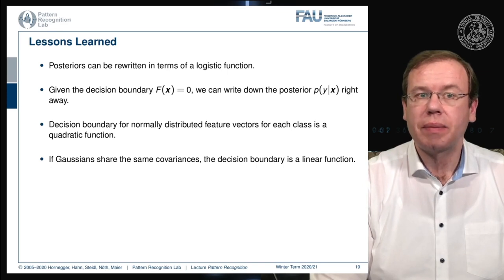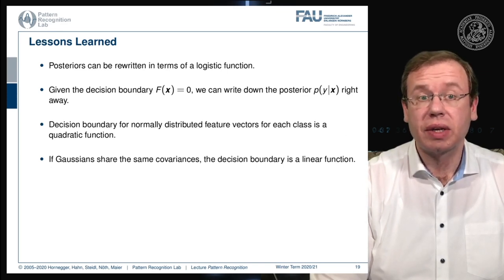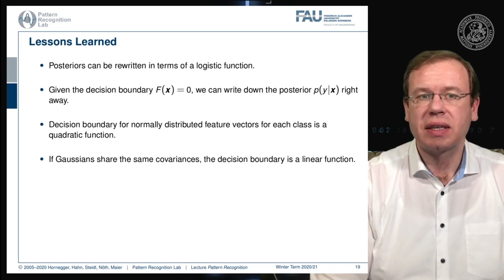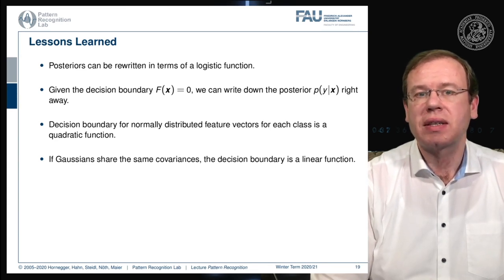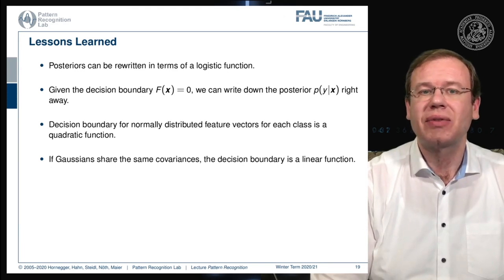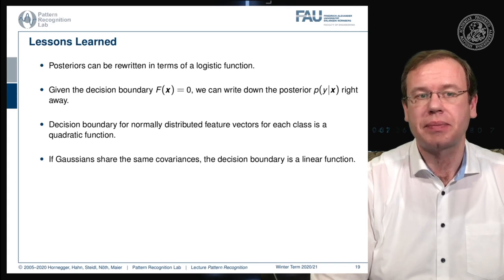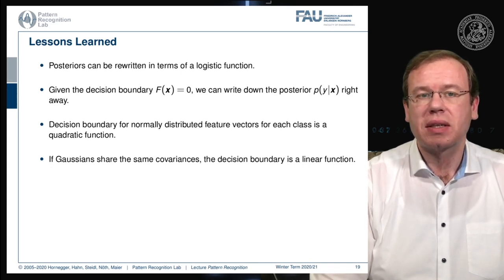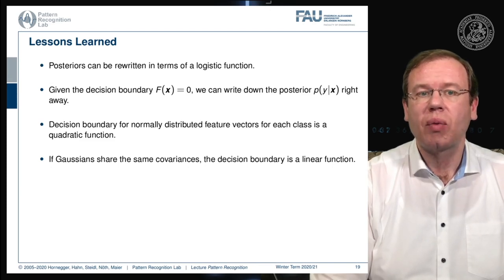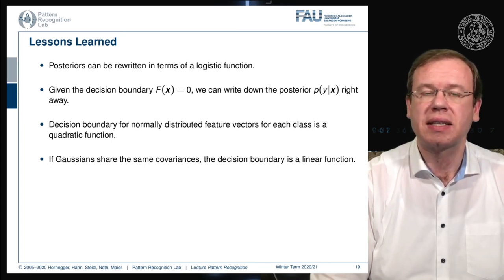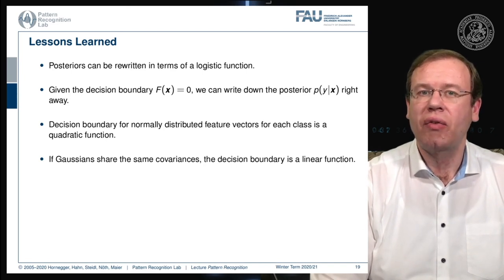Here are some lessons learned so far. We've seen that posteriors can be rewritten in terms of a logistic function, and that the decision boundary f of x equals zero is essentially related to the posterior directly — we can map the two together using the logistic function. So if we know the decision boundary, we can immediately derive the posterior probability. Also, the decision boundary for normally distributed feature vectors is always a quadratic function, and in the special case of equal covariances, it becomes even a linear function.